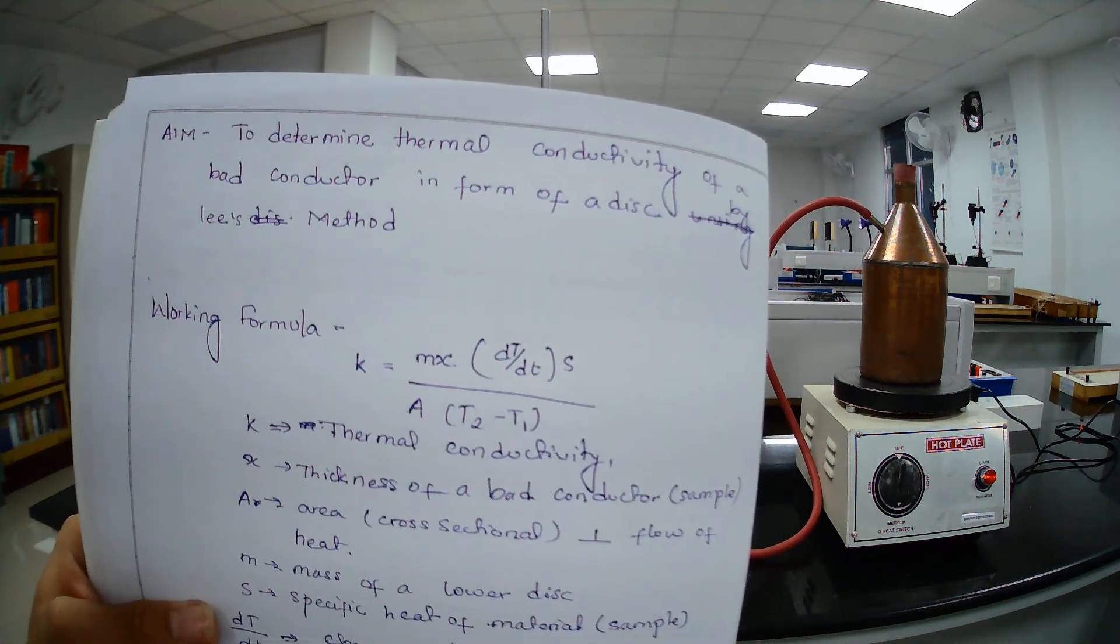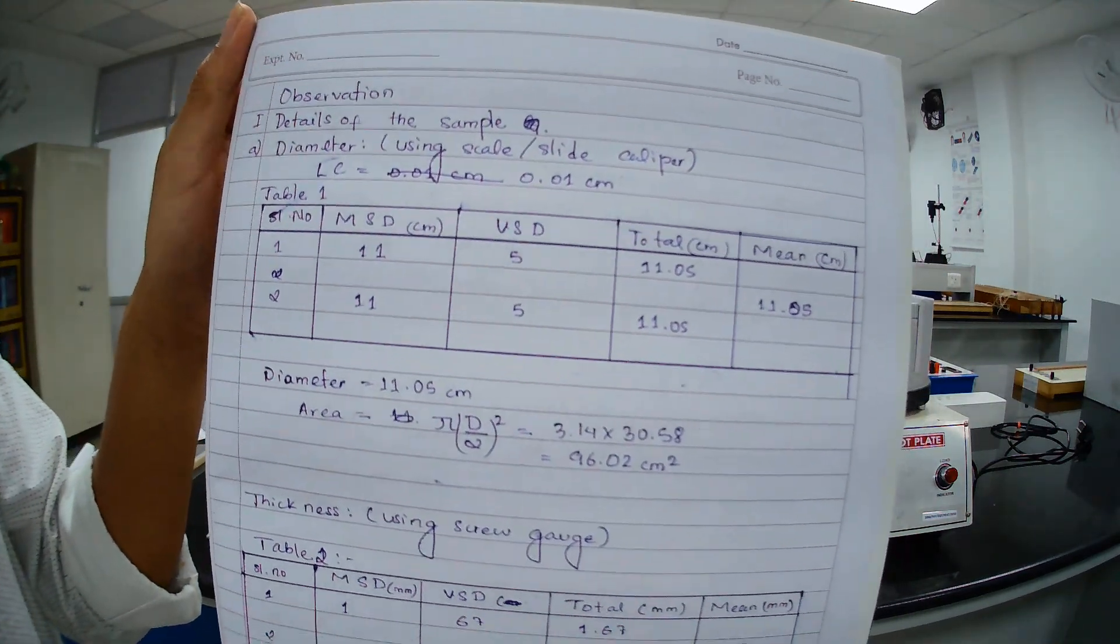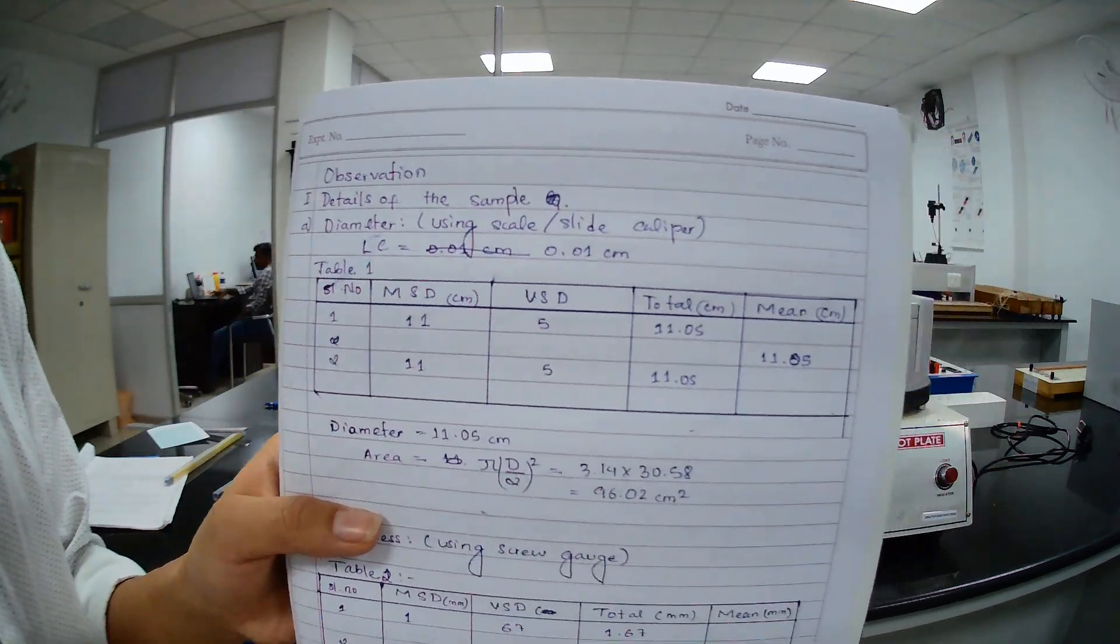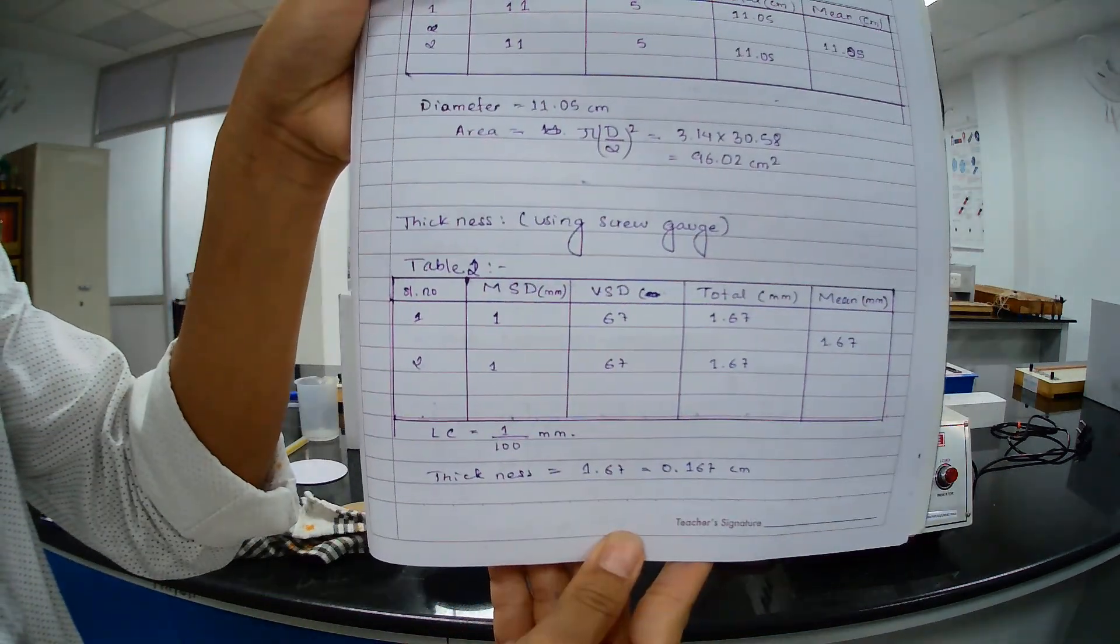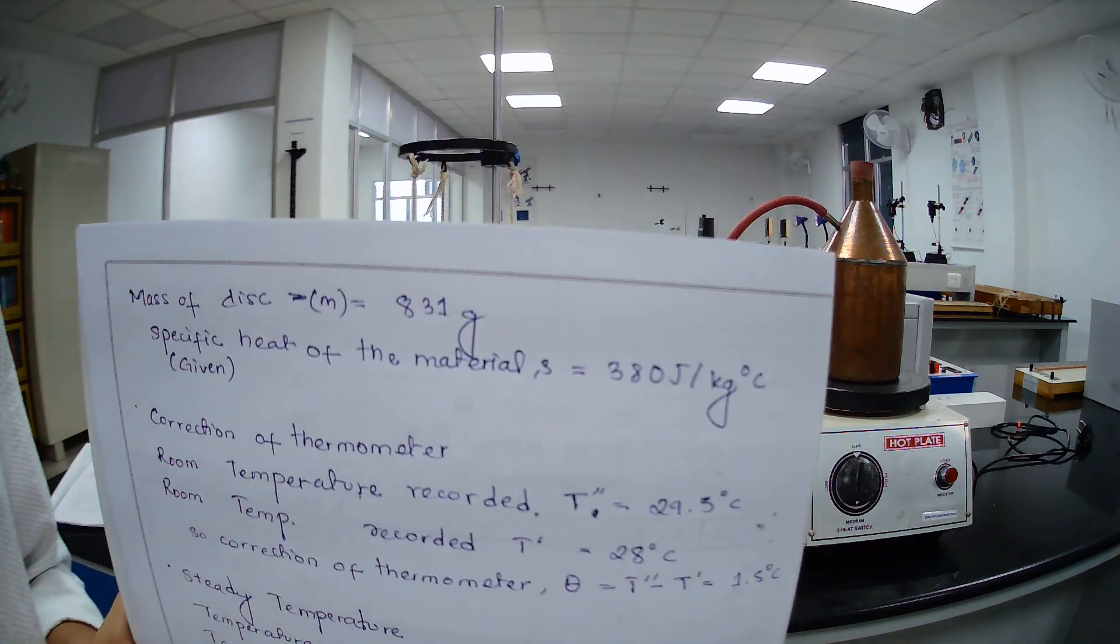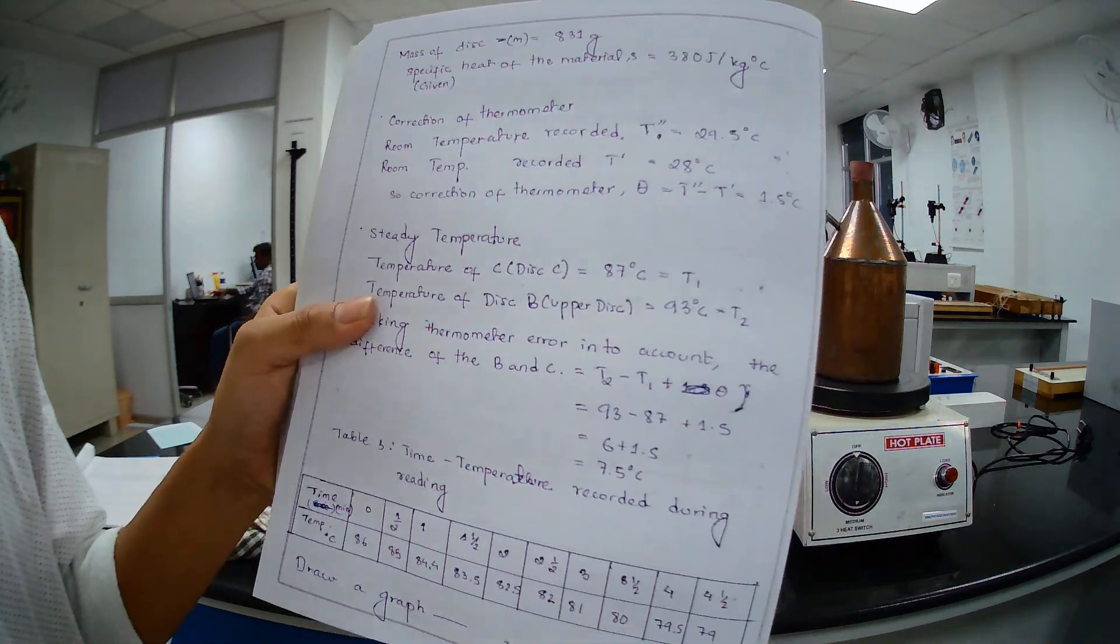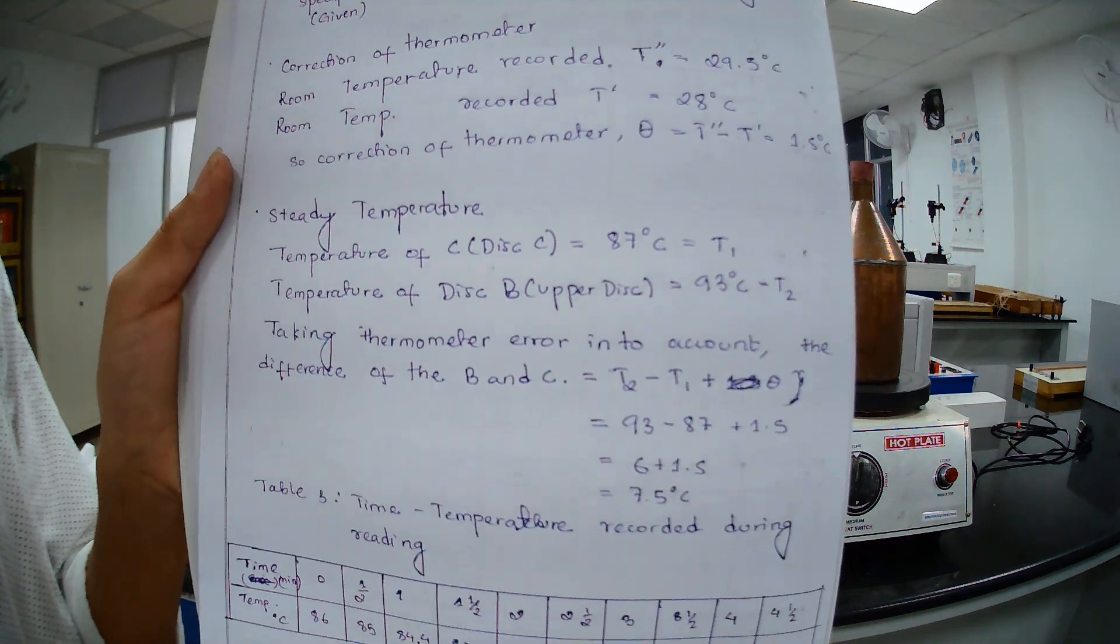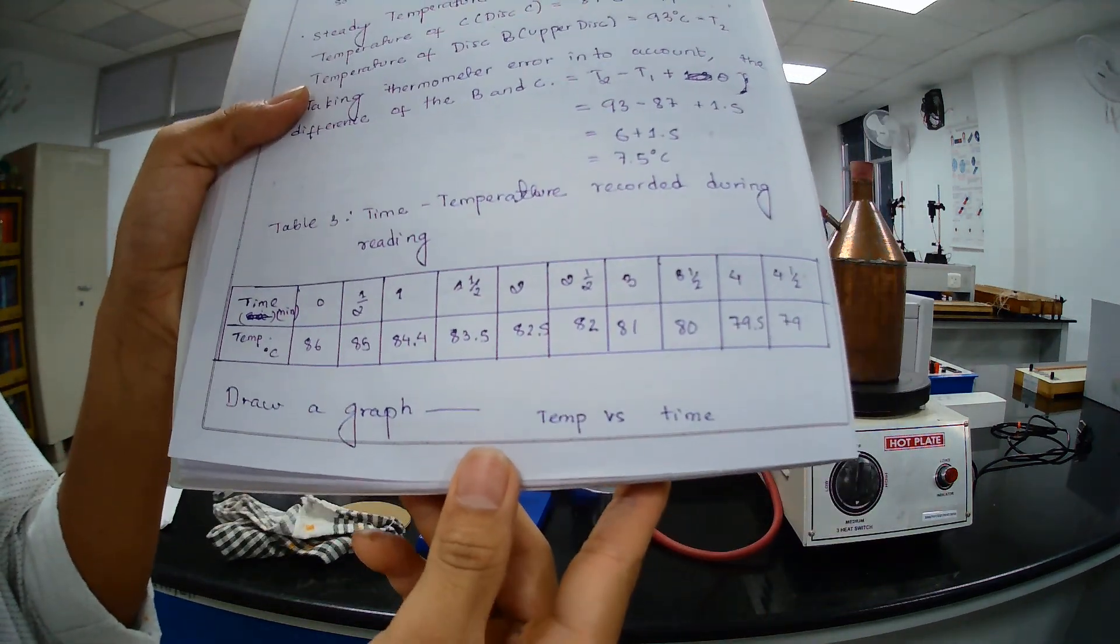Now I will show you the data. This is the reading. You can take a screenshot. First this table one and then this is for thickness. First this table one and then this. First this.